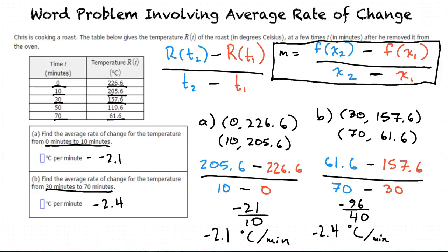In summary, between 0 and 10 minutes, the roast cooled at an average rate of 2.1 degrees Celsius per minute. And between 30 and 70 minutes, the roast cooled at an average rate of 2.4 degrees Celsius per minute. This is one situation in which we can apply the formula of average rate of change. To summarize: to find the average rate of change between two points, take the difference between the y values or outputs divided by the difference between the x values or inputs. You understand this very well.